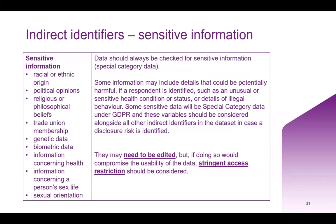Finally, a bit more on sensitive information. The special category data — including ethnicity and religious affiliation — can be handled slightly more easily with standard coding frames, but that's not applicable to all types of sensitive data. Data should always be checked for sensitive information. Some information may include details that could be potentially harmful if a respondent is identified, such as an unusual or sensitive health condition, or details of illegal behavior. This type of information might just need to be edited out, or if doing so would compromise usability, more stringent access restriction can be discussed.